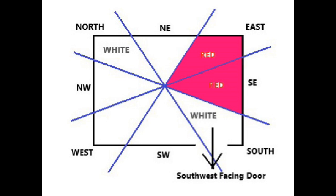The areas to the northwest, west, southwest, and northeast are all positive and in no need of special treatment. In these areas, you may use the color of your birth star or the color that harmonizes your birth star with the star of the doorway. Or you can use the colors of your lucky stars in these areas if you wish. As you can see, there's a lot of selection when it comes to colors.